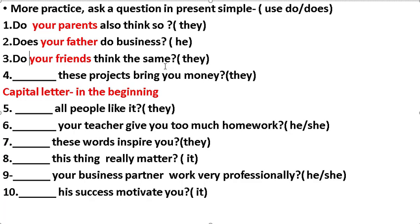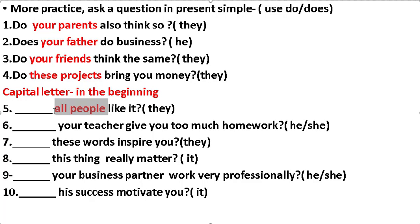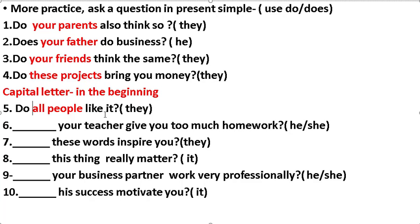Number four: this project bring you money. This project — it. We use 'do' — does this project bring you money? Capital letter at the beginning. Number five: all people like it. All people — they. We use 'do'. Do all people like it?